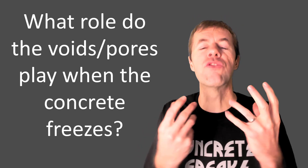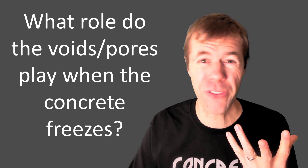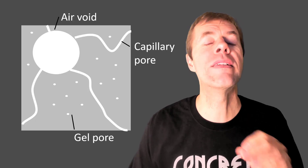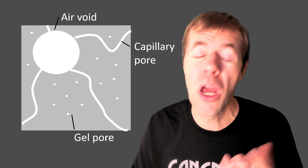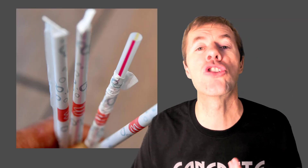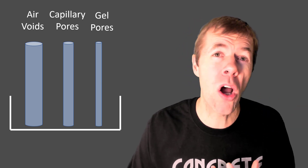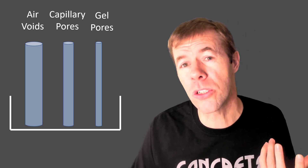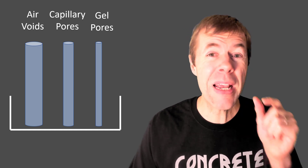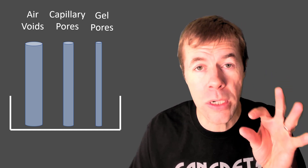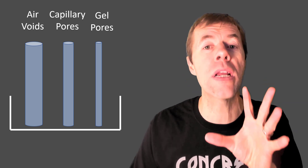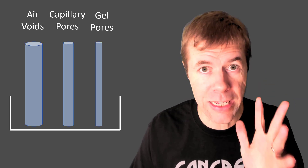So what role do these voids or pores play when concrete freezes? Instead of trying to explain it in a complicated cartoon, we're going to simplify it with just straws. When we have a tub of water and we put in straws of different sizes, the smallest straws are like the gel pores, the medium straws are like the capillary pores, and the largest straws are like the air voids. Based on their size, they're going to have different performance. Buckle up.